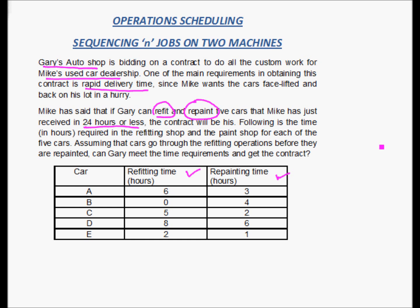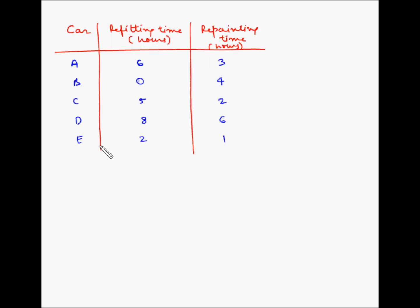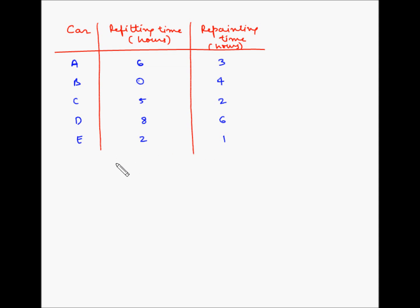Let us see how Gary can schedule or sequence these jobs to get the contract. We have cars A, B, C, D, and E with refitting time in hours and repainting time in hours. We have to find out how to sequence these cars such that the overall processing time is less than or equal to 24 hours. Let us use Johnson's rule. Johnson's rule says first you have to list the operations and the time for the operations on both machines, then select the job with the shortest operation time.